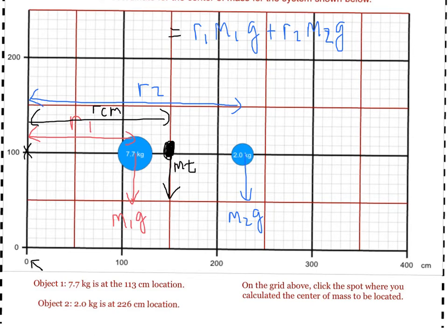So, this original torque must be equal to the mass of our system times gravity times the distance to the center of mass. Notice you have the gravitational field in each term, so that can cancel out.